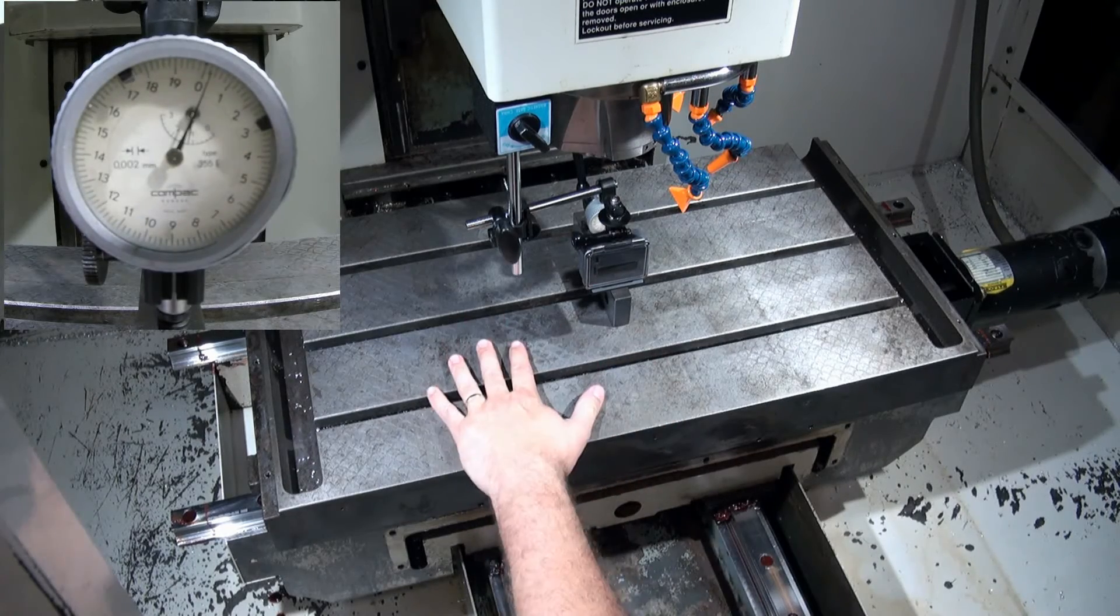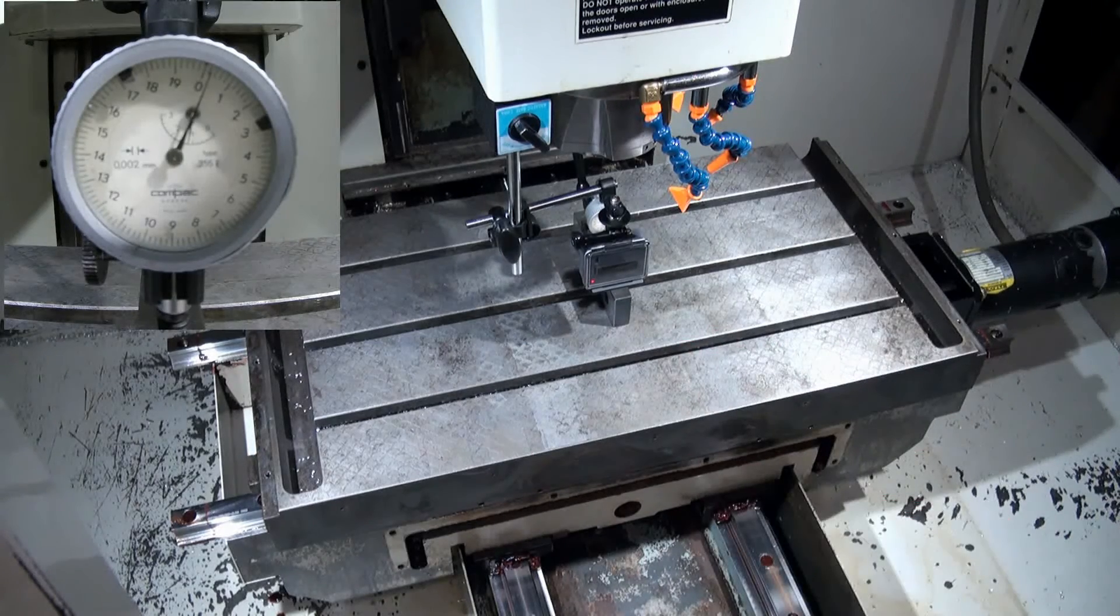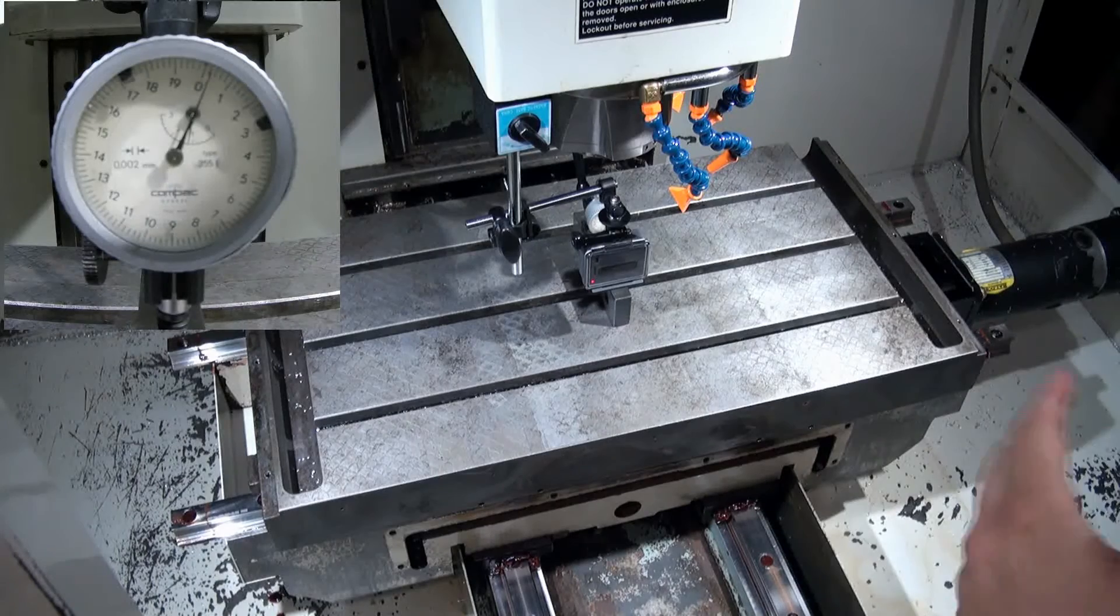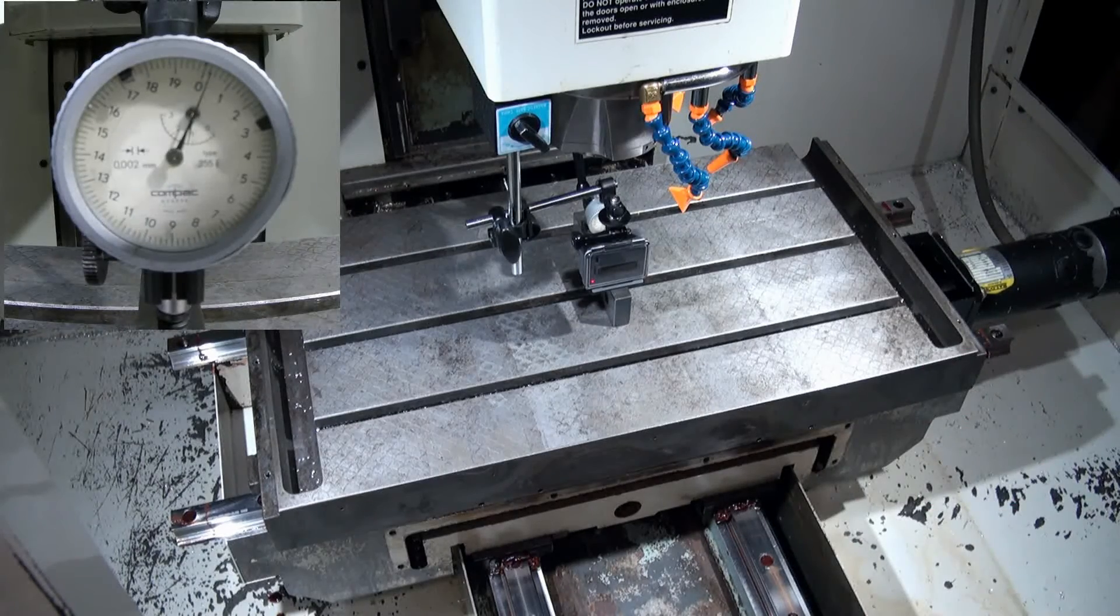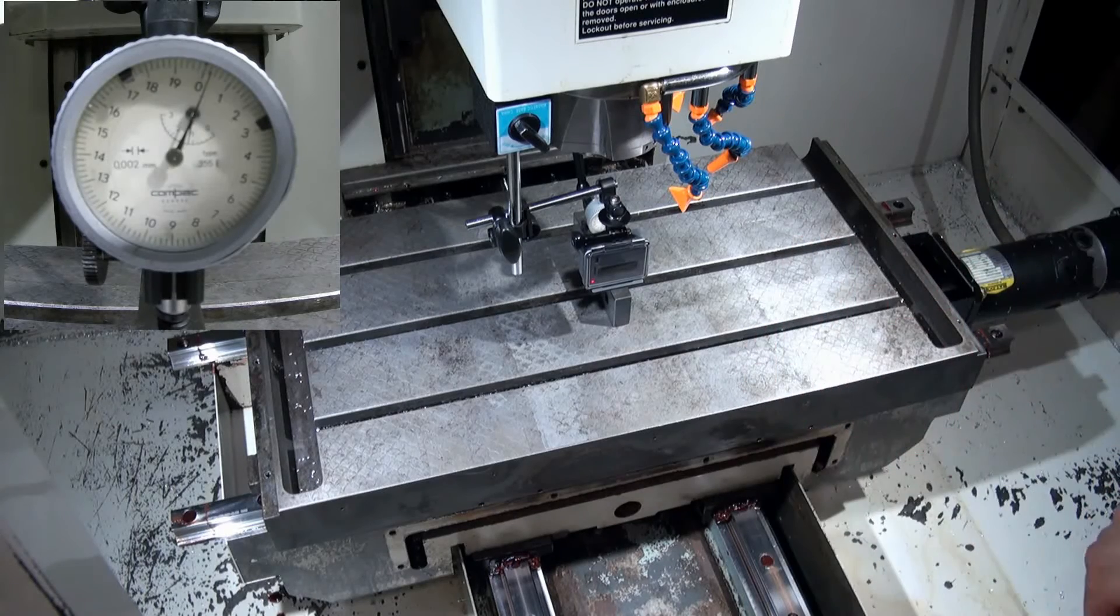So by doing this test we can tell that our table is nice and parallel to our plane of motion. Having a couple of ten-thousandths of an inch of slope is well within the specs of this machine. You can always refer back to your machine specs to see how accurate it's supposed to be. But that's well within what we need to do to make our parts accurately.